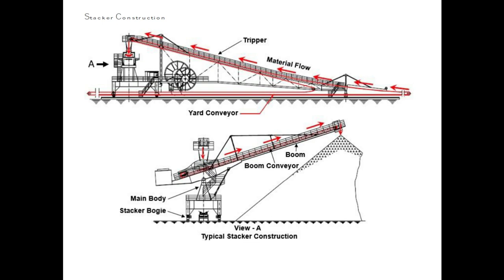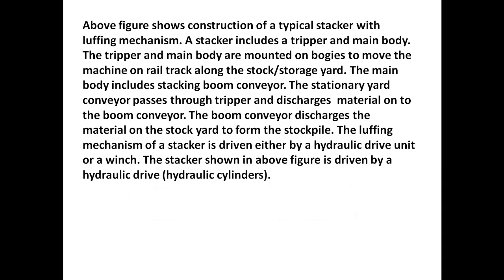The stacker has a main body with conveyors, stacker bogies for travelling, a boom conveyor, and boom height adjustment. The stacker includes a tripper and main body mounted on bogies to move the machine on the rail track along the stockyard. The stationary yard conveyor passes through the tripper and discharges material onto the boom conveyor. The boom conveyor then discharges the material onto the stockyard to form the stockpile. The luffing mechanism of the stacker is driven by a hydraulic drive unit or a winch.